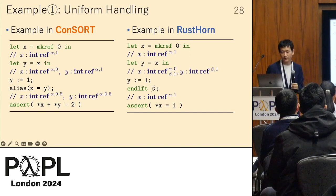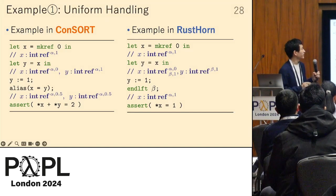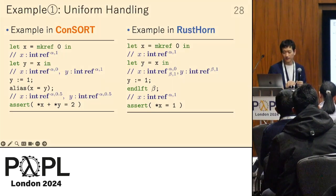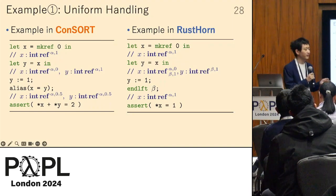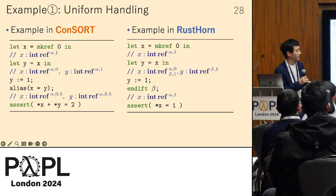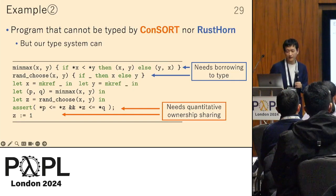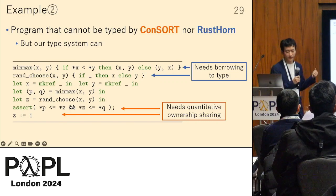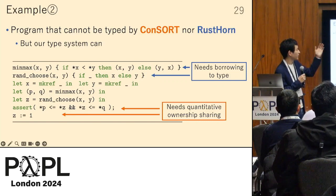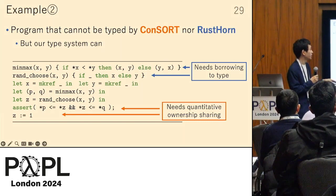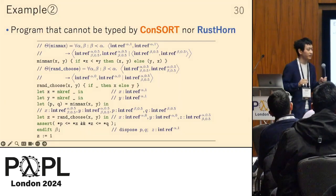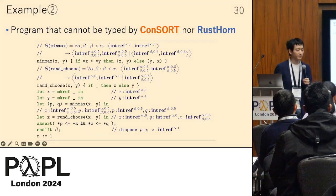Our type system can uniformly type the examples from both Consort and RustHorn — in other words, our type system successfully subsumes both of them. Our type system also has more expressive power than both: for example, this program cannot be typed by Consort nor RustHorn, but our type system can handle it. Please read the paper if you are interested.